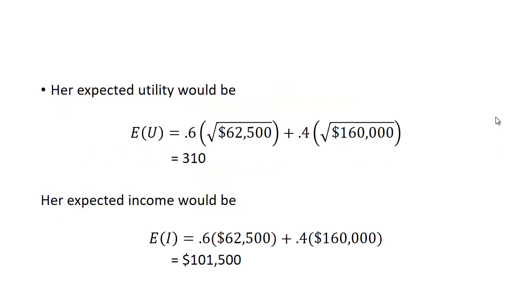Then her expected utility would be 0.6 times the square root of $62,500 plus 0.4 times the square root of $160,000. This would be the utility she would get at $62,500, this is the utility at $160,000, and we weight them by the probability of those things happening. We get expected utility of 310.